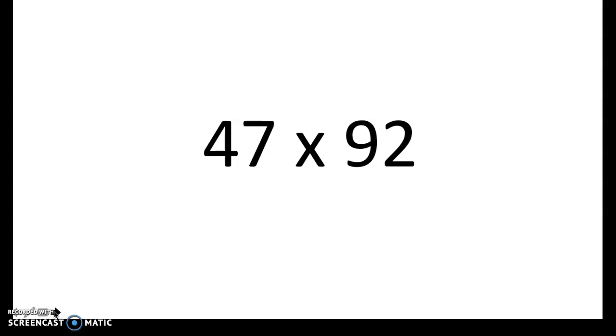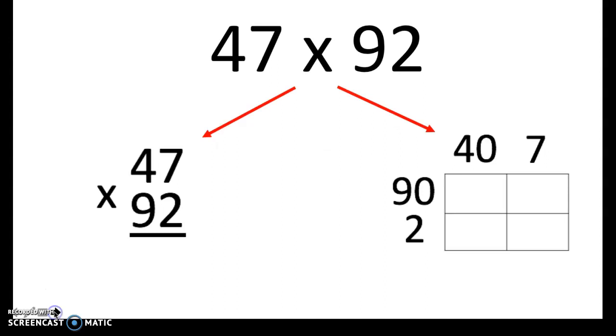So typically our 5th graders will encounter multiplication problems in a word problem. However, just for the sake of breaking down this strategy, we're going to use this multiplication expression of 47 times 92. Now in 5th grade, our scholars are going to be expected to use two strategies when they are multiplying multi-digit numbers. And again, what I mean by multi-digit numbers means that there's more than one digit in both sides of the expression. For example, 47 and 92.